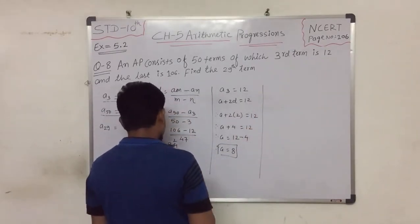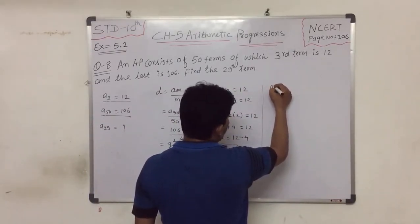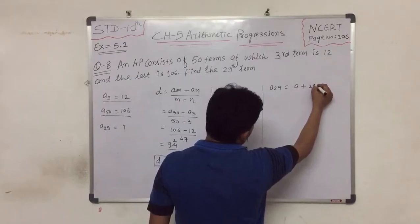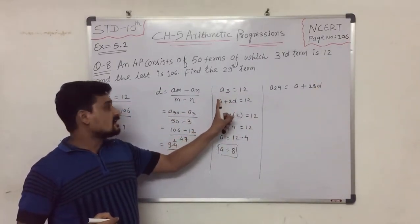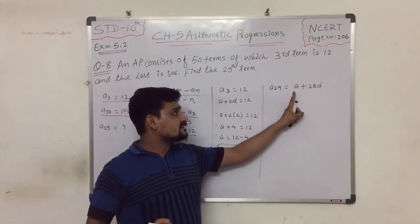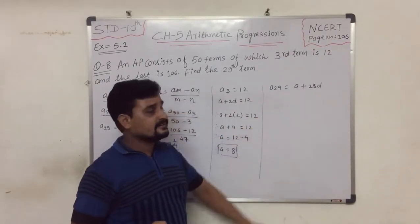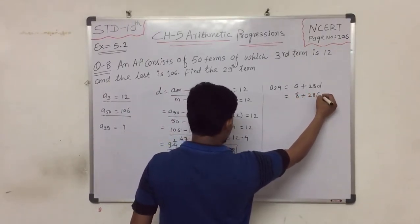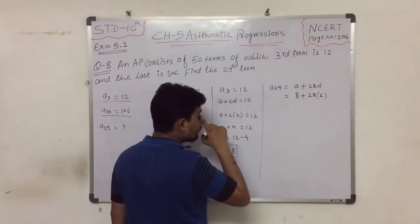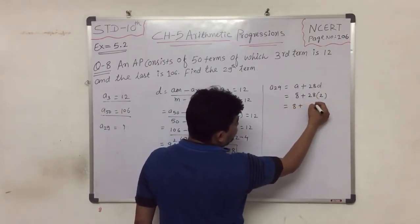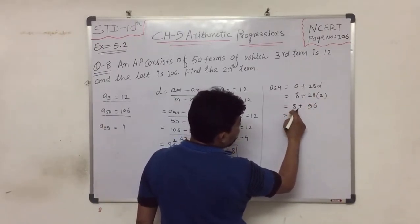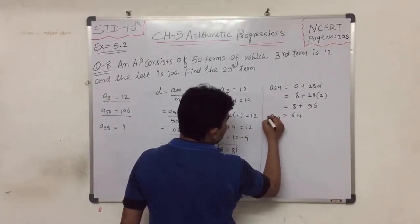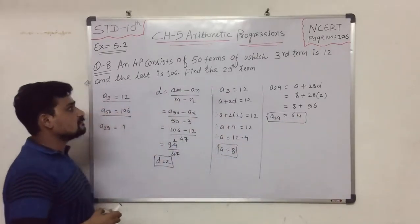Now A29 equals A plus 28D. So A29 equals 8 plus 28 times 2, which is 8 plus 56, equals 64. So A29 is 64, and this is the answer.